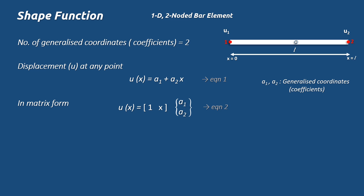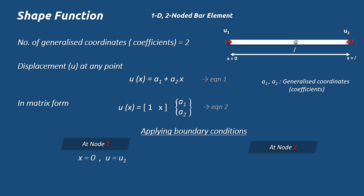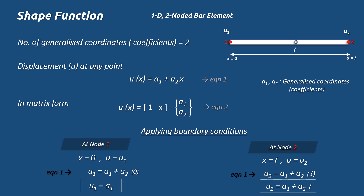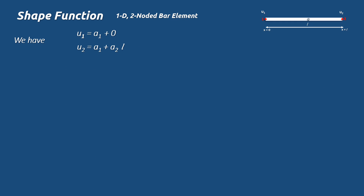To find the displacement at any point x, we need the constant coefficients a1 and a2. We find them by applying boundary conditions at node 1 and node 2. At node 1, x = 0 and u = u1, giving u1 = a1. At node 2, x = L and u = u2, giving u2 = a1 + a2·L. So we have expressions for u1 and u2 in terms of a1 and a2, and we need to find their values.